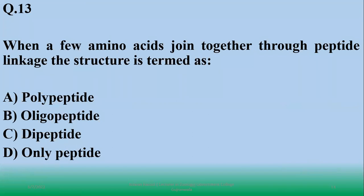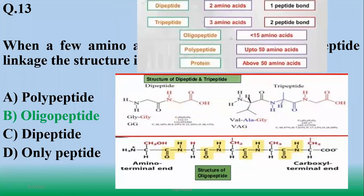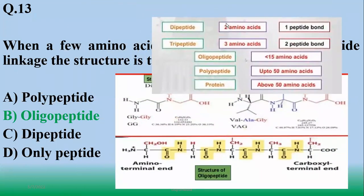Number 13: when a few amino acids joined together through peptide linkage the structure is termed as oligopeptide. Oligopeptide has less than 15 amino acids, polypeptide has up to 50 amino acids or more than 50 amino acids.